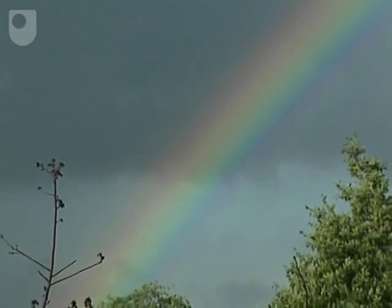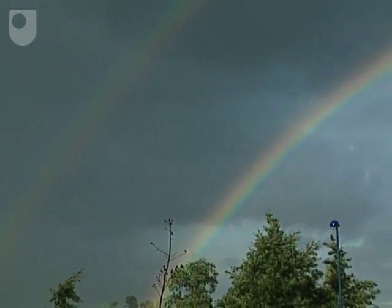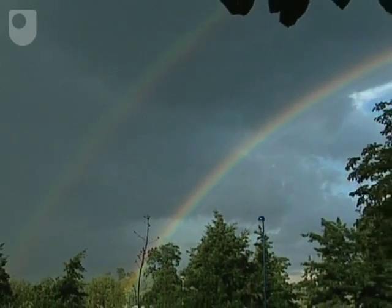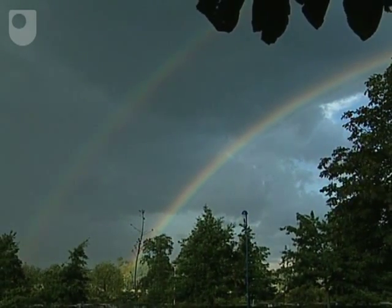But you can sometimes see a fainter bow outside the main circle. The order of the colours in this secondary bow is reversed, with violet on the outside and red on the inside. How can this phenomenon be explained?